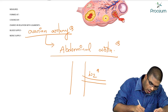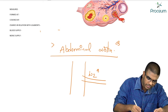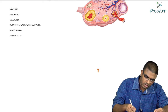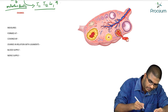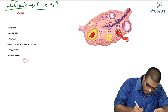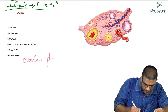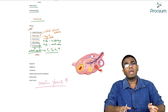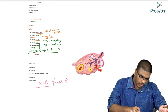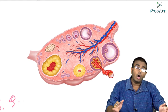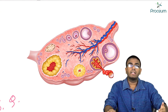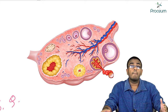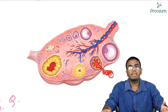The nerve supply of the ovary comes from the ovarian plexus. In this video, we have covered all the external and internal genitalia of the female and all the related MCQs. In the next video, we will discuss the menstrual cycle in a female.